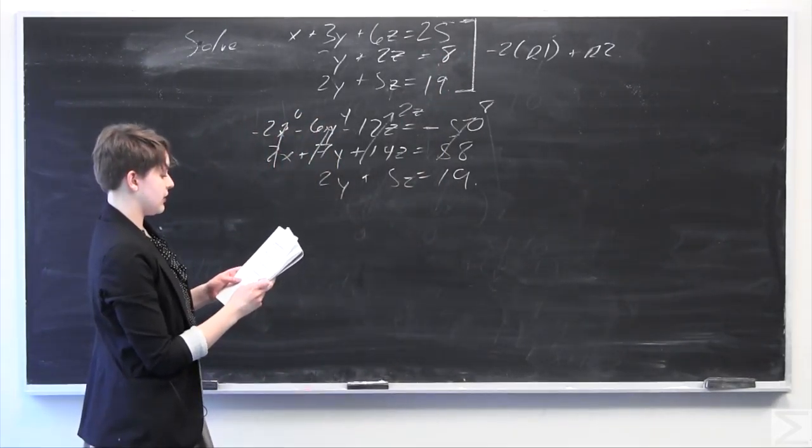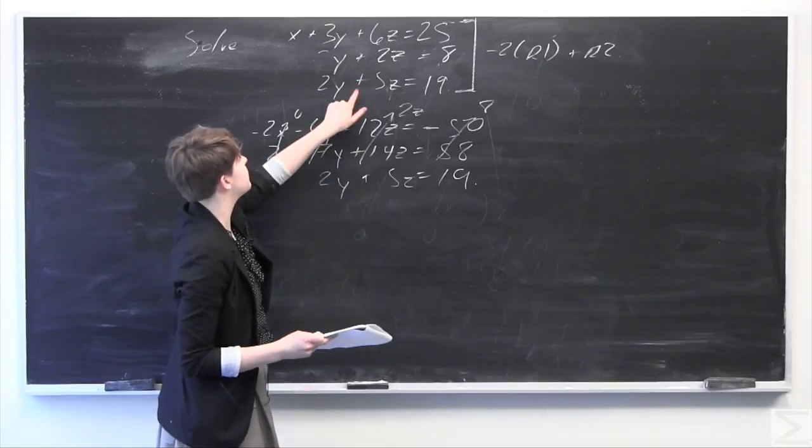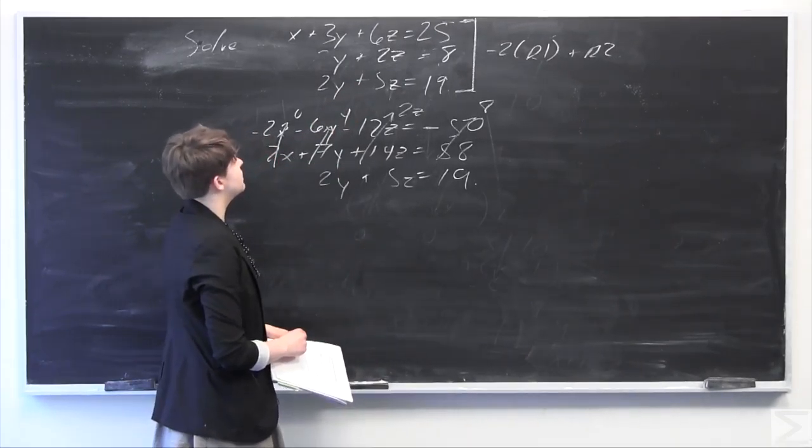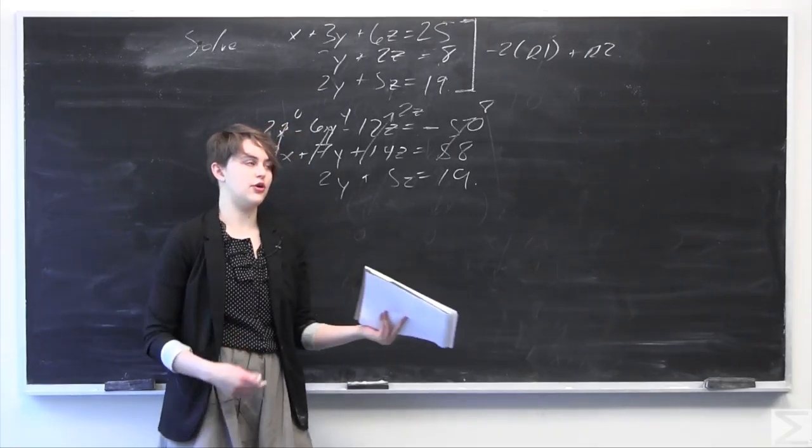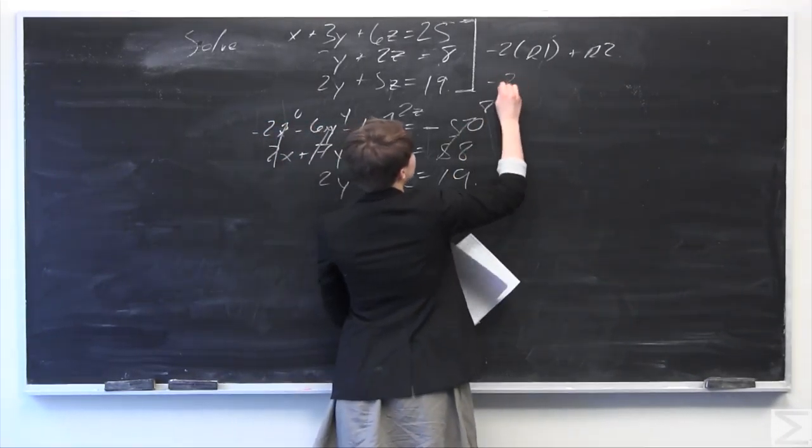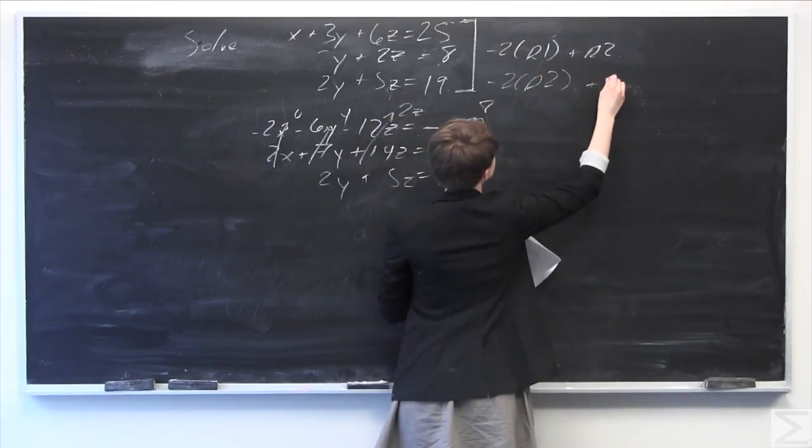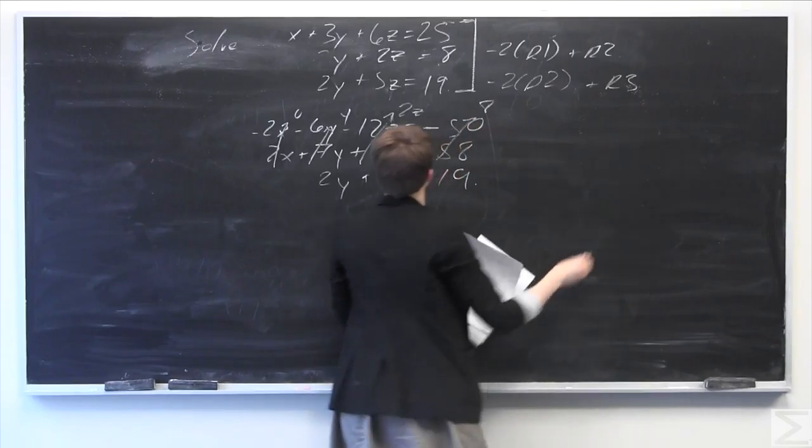Now we're going to try to cancel out the y from the last row, so we're left with just z's. We're going to multiply negative 2 times the second row plus the third row. So negative 2 times row 2 plus row 3.